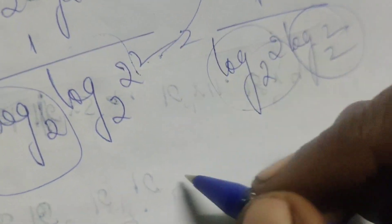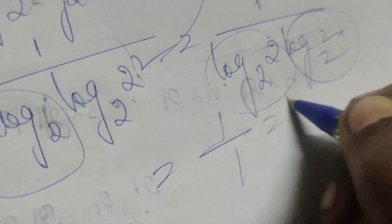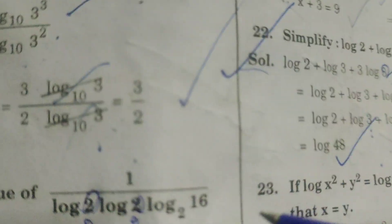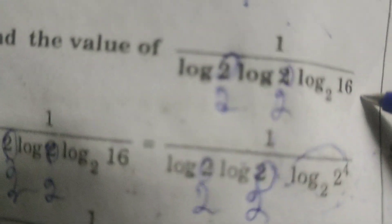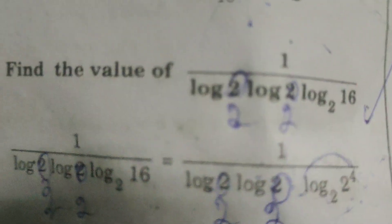Again, this is also 1, so 1 over 1 equals 1. One is the solution to this logarithmic problem. Thank you.